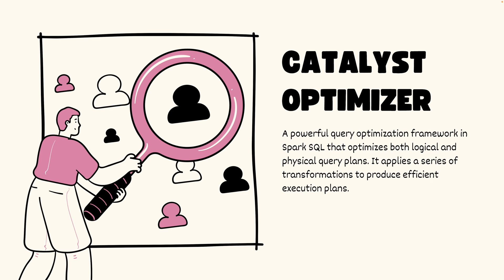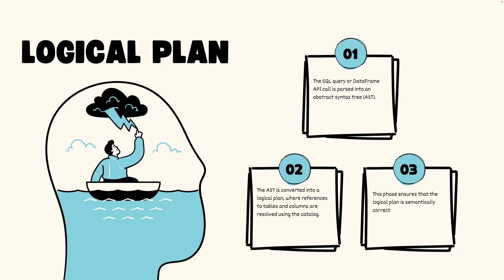Let's look at the different stages of Catalyst Optimizer. The first thing it does is create a logical plan. Your SQL query gets parsed into a tree called an abstract syntax tree. This tree is then converted into a logical plan where syntax references are resolved, validated, and simplified. References to tables or columns are resolved using the catalog, ensuring that your logical plan is semantically and syntactically correct.